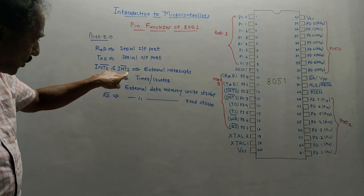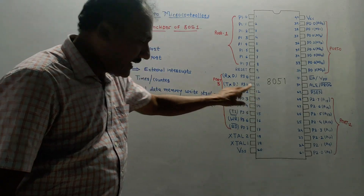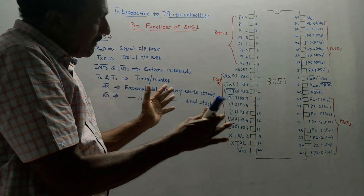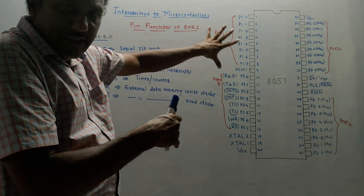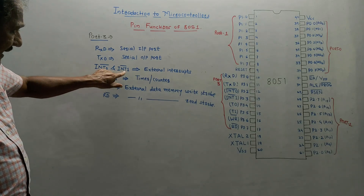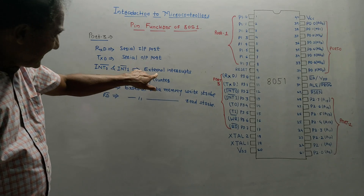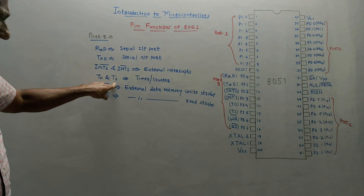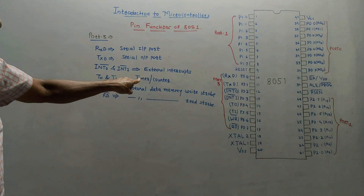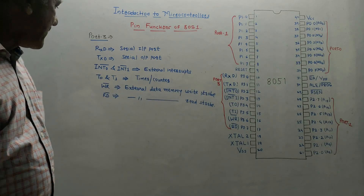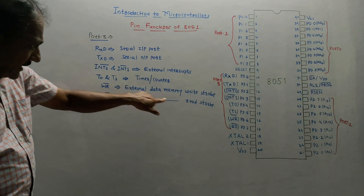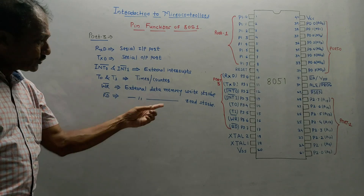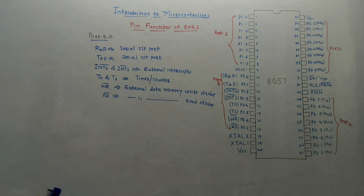INT0 and INT1 are pin numbers 12 and 13 — INT stands for interrupt. T0 and T1 are pin numbers 14 and 15 — these are timer or counter pins connected to these two pins. WR bar is pin number 16 — it is the external data memory write strobe. RD is pin number 17 — it is the external data memory read strobe.